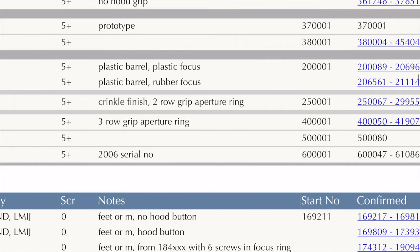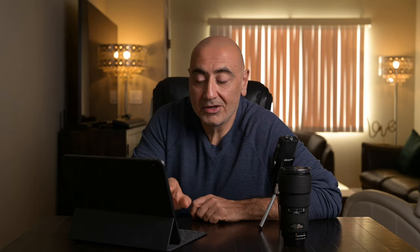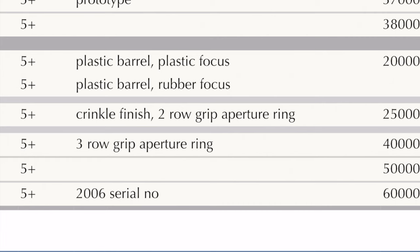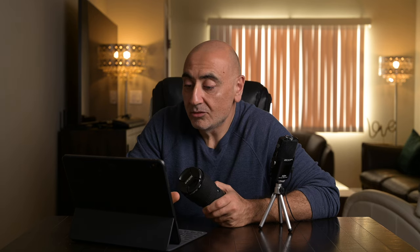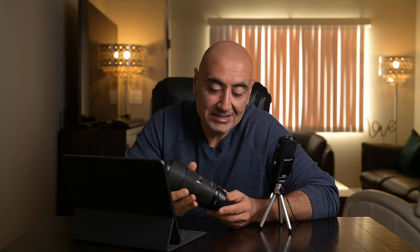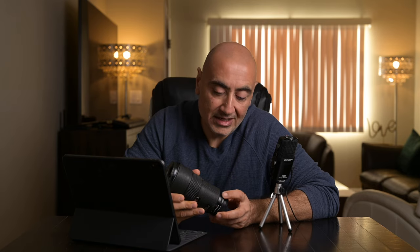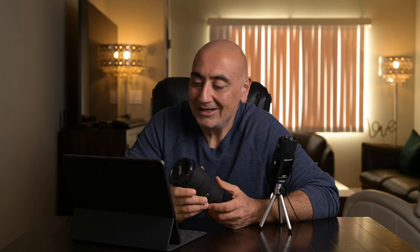There are cool little notes on each lens. For example, my lens — the 180mm f/2.8 D — has a crinkle finish two-row grip aperture ring. The three-row grip came out with the D version in 1994, so mine is the two-row grip aperture ring. If you look at my lens it has two rows right here on the grip aperture ring. Very cool little detail.